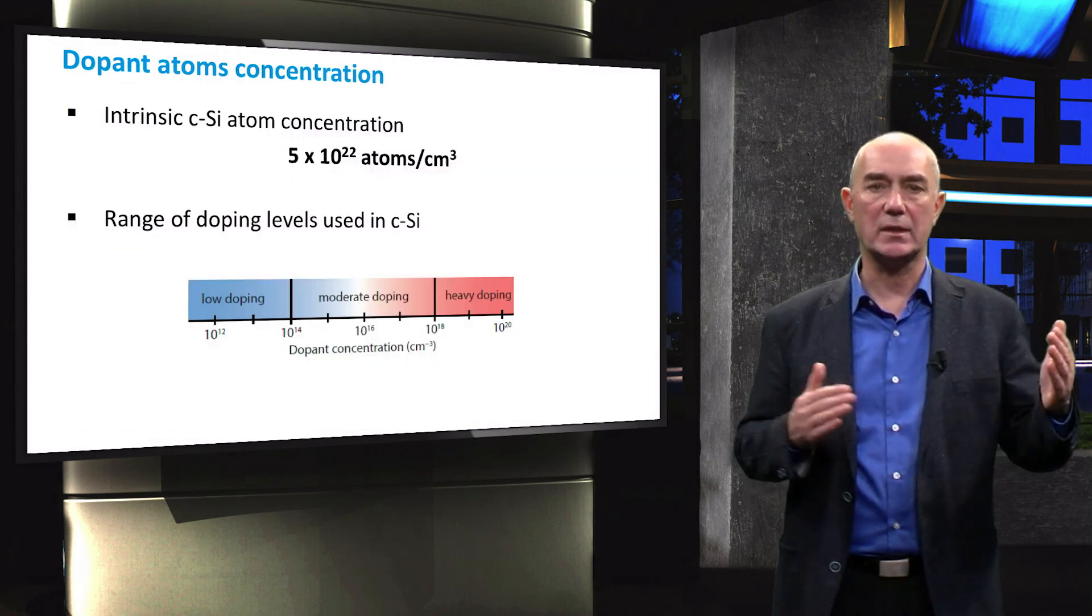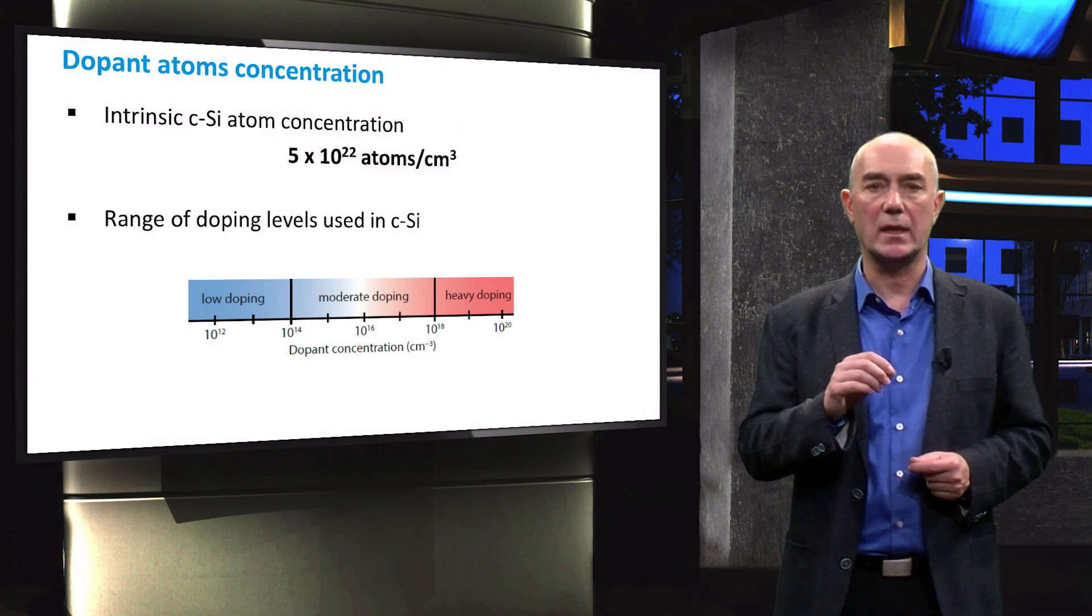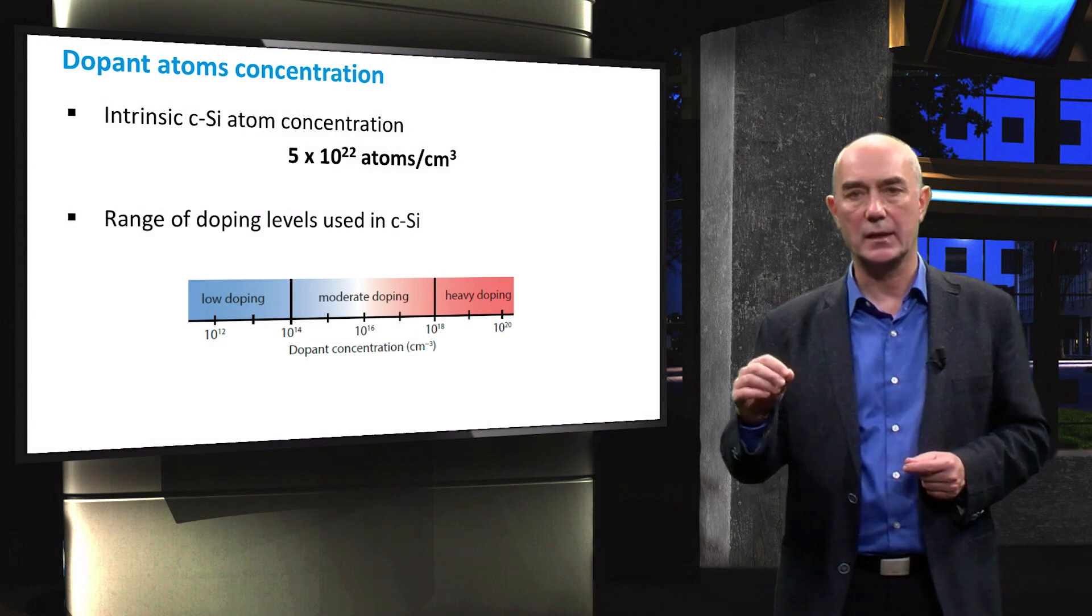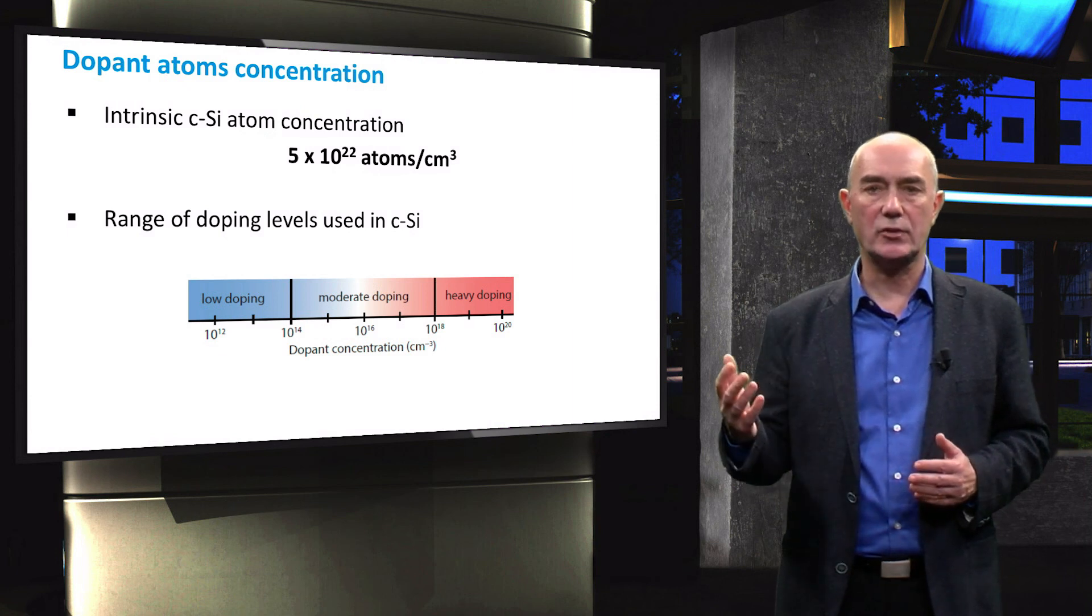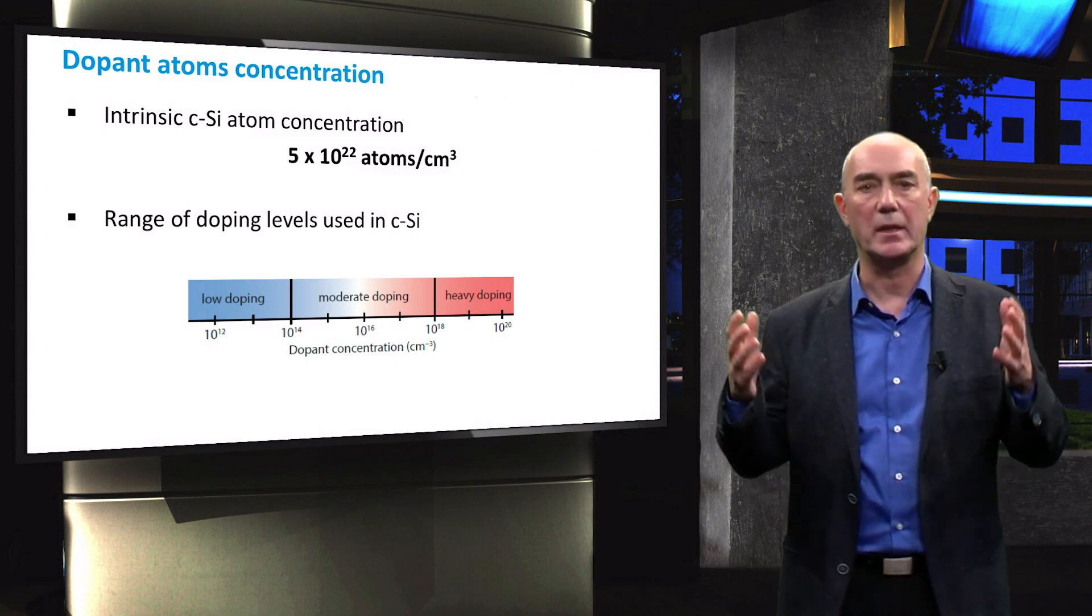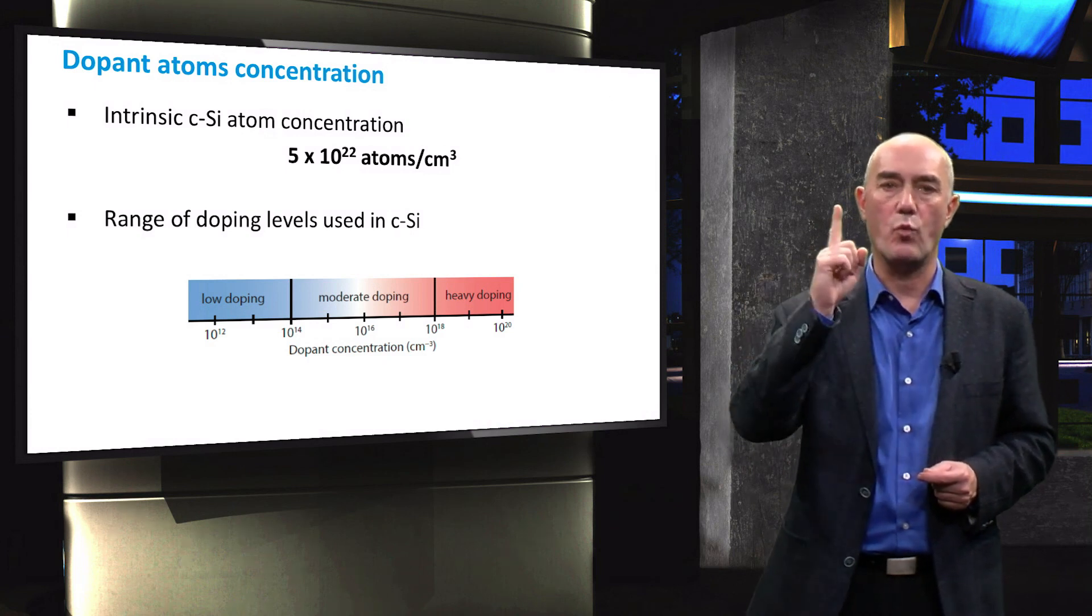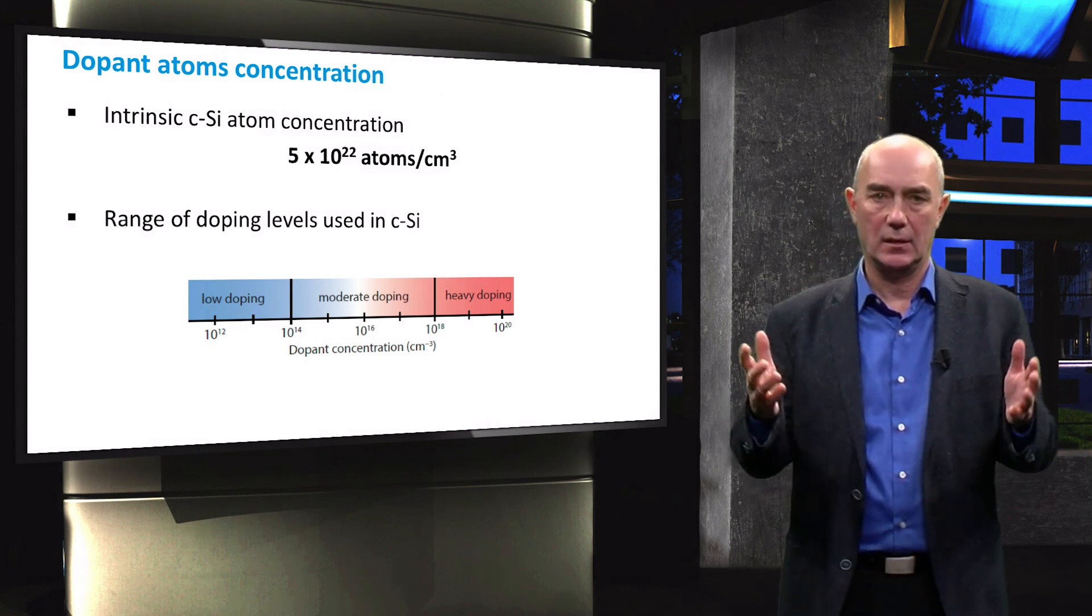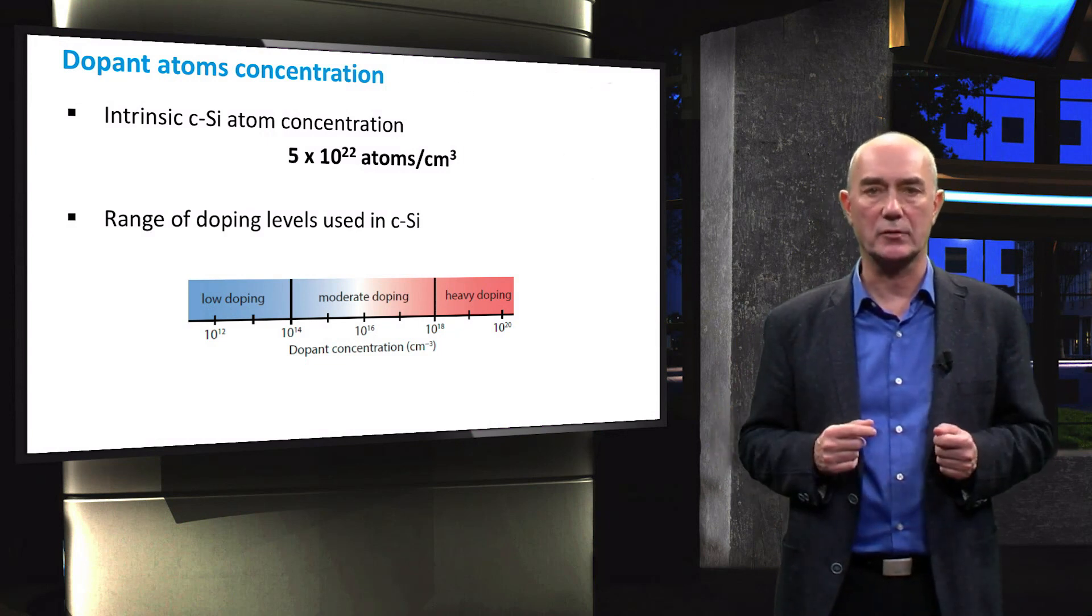The dopant concentration can be selectively chosen according to the application. For crystalline silicon we may have three levels of doping: low, moderate and heavy, whose ranges can be seen in this picture. For illustration, when we take a moderate doping of 10 to the power of 16 dopant atoms per cubic centimeter, this means that we have substituted just one silicon atom out of one million silicon atoms. For solar cell applications we generally use layers with moderate to high doping concentrations.